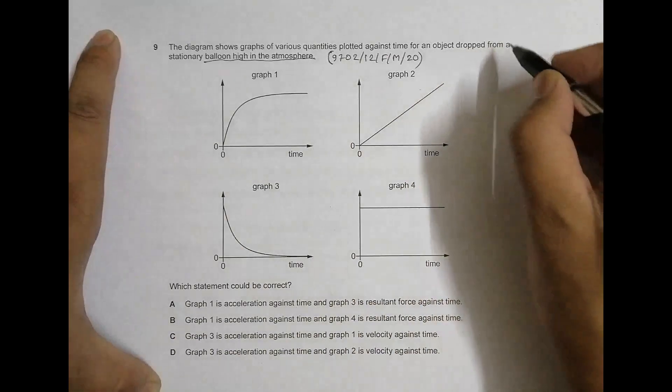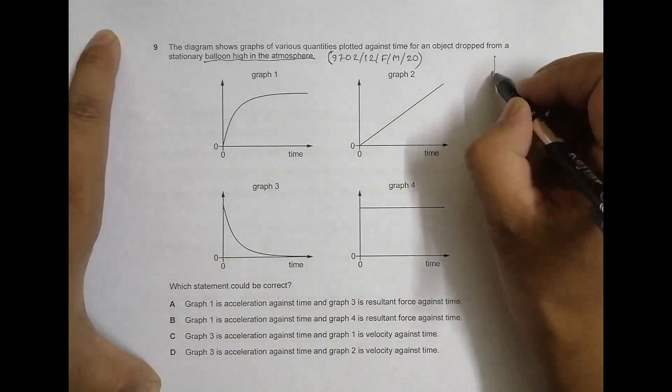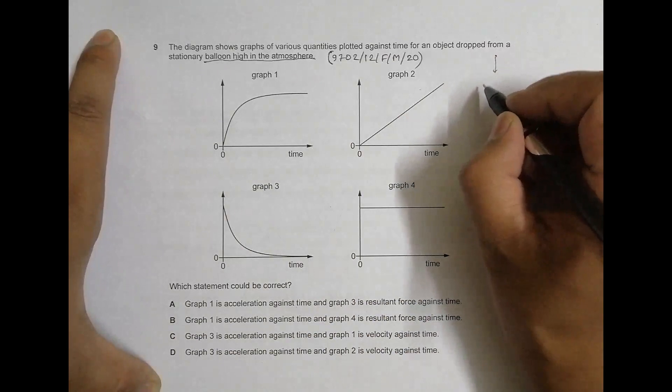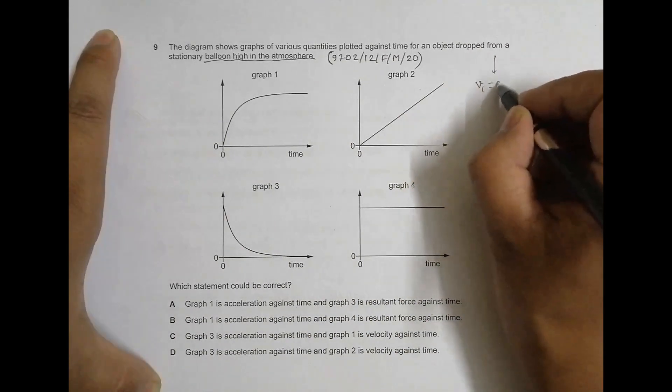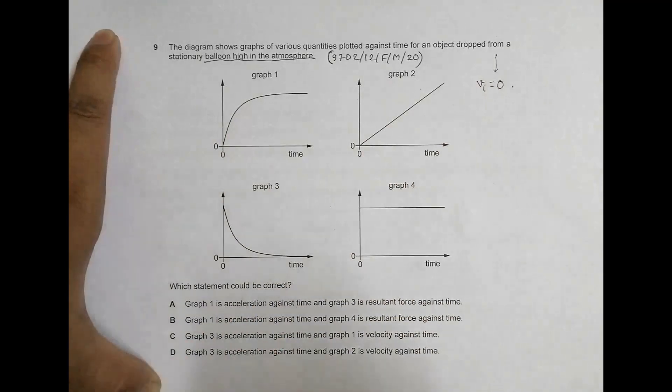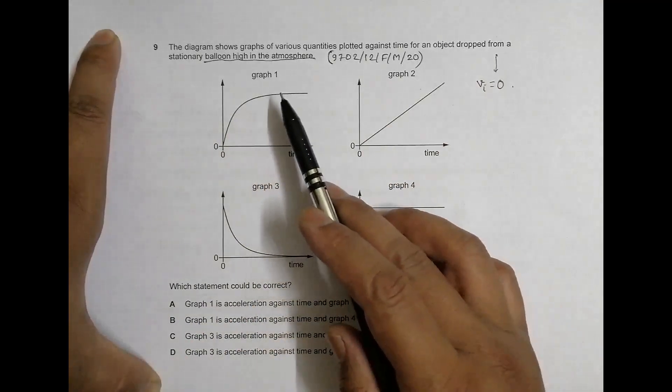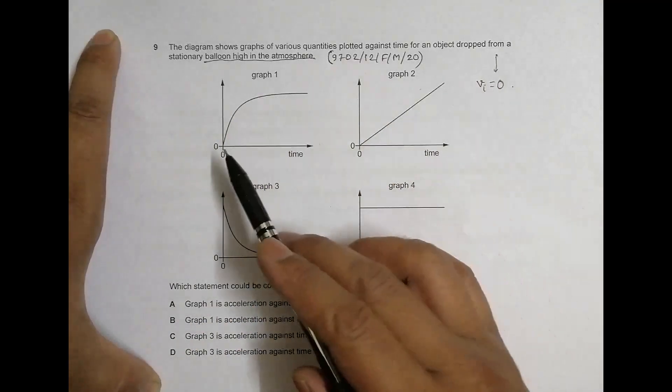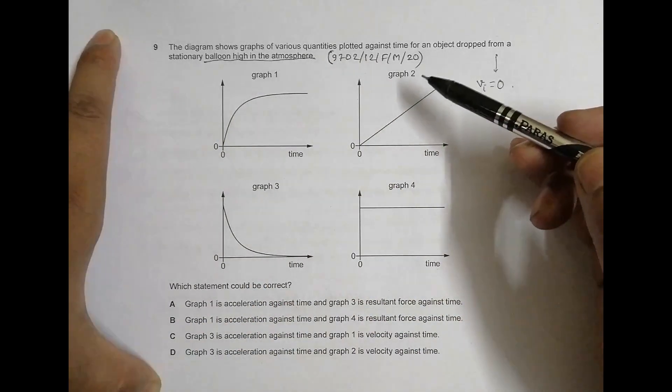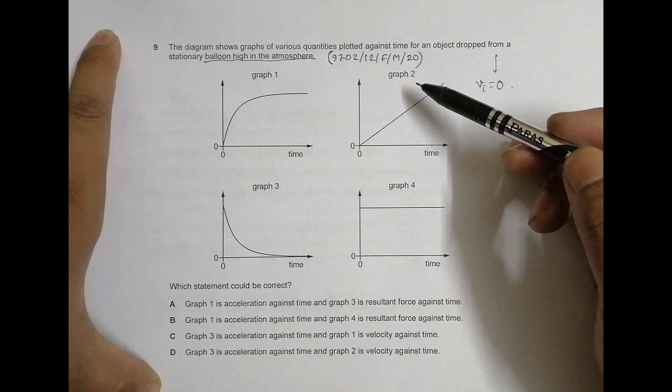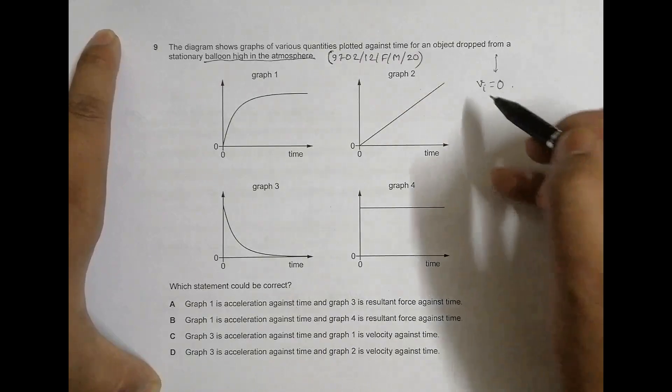When an object falls from a height against air, what happens is the initial velocity is zero. V initial equals zero. So that means graph 1 could be velocity and graph 2 also could be velocity.